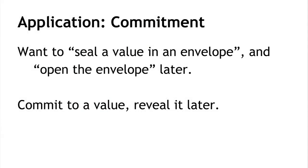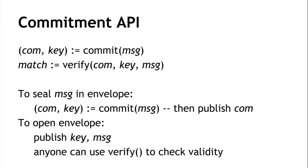An application of the hiding property is a commitment scheme — the digital analogy of sealing a value in an envelope. The commitment API has two operations: commit to a message, which returns a commitment and a key; and verify, which given a commitment, key, and message, returns true or false. To seal a message, you publish the commitment. Later, to open the envelope, you publish the key and message, and anyone can verify the opening using the commitment they saw previously.